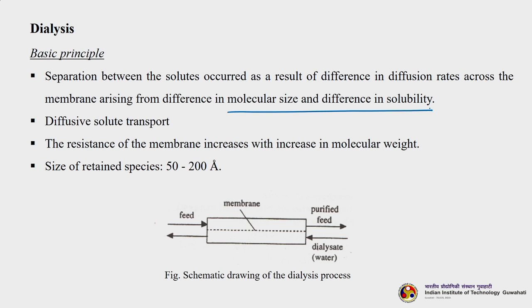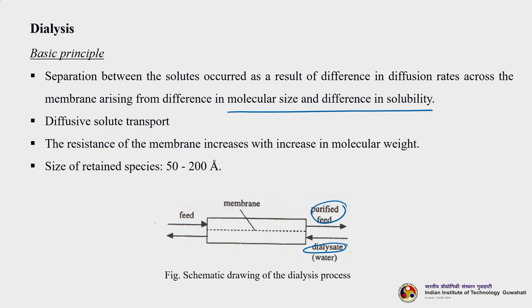The mechanism is diffusive solute transport. In this schematic diagram of the dialysis process, the feed flows in one direction to give a purified feed, while water — known as dialysate, which may be water, a buffer solution, or another solvent — flows in the reverse direction. This is a counter-current arrangement. The membrane resistance generally increases with increase in molecular weight, and the size of retained species is about 50 to 200 angstroms.